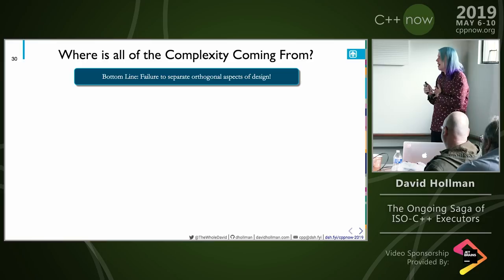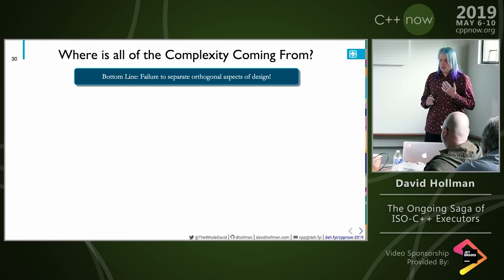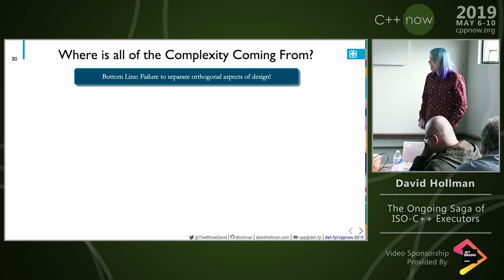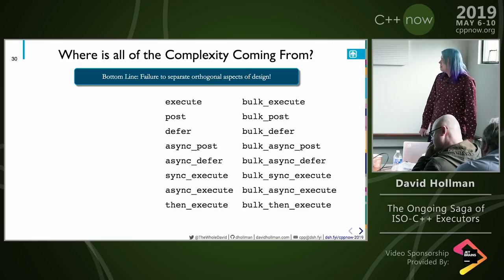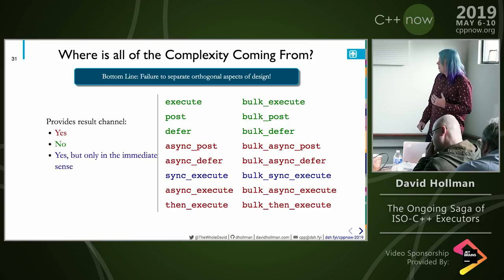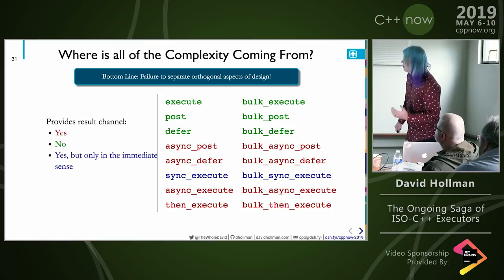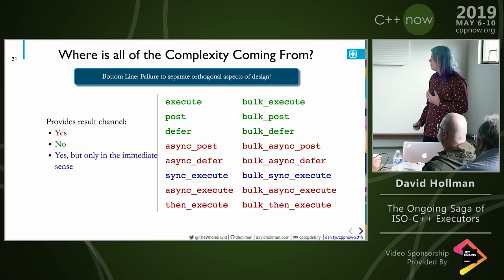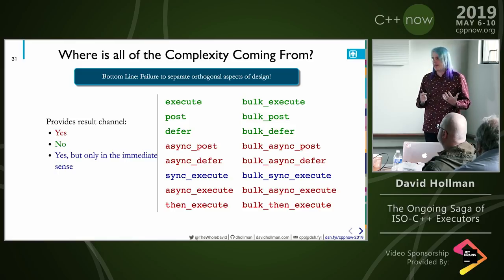The bottom line is that we hadn't yet learned the lesson about separating orthogonal aspects of design. This really applies to any generic library design in any domain. We had all these functions, and we had these orthogonal aspects — the provision of a result channel, the cardinality (single vs. bulk), blocking behavior (always blocking, never blocking, possibly blocking), and preference for the first step of the closure — and we were encoding those aspects in the function name, which is not a good way to encode them.